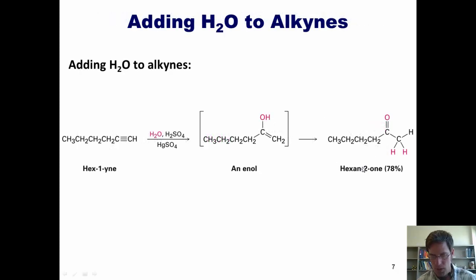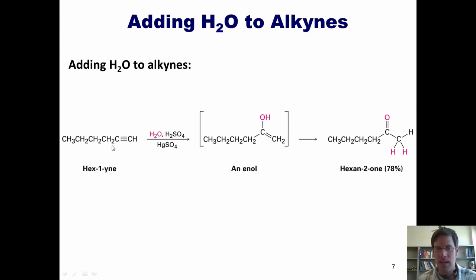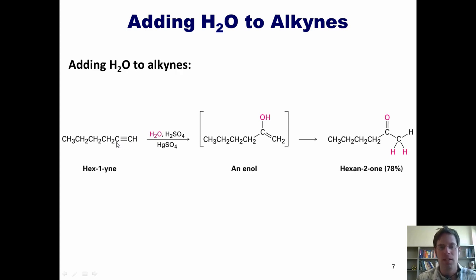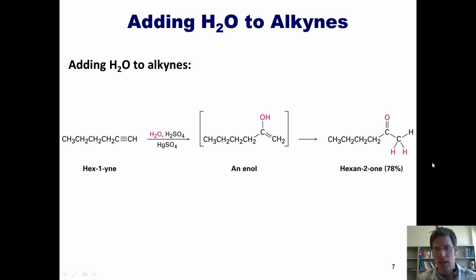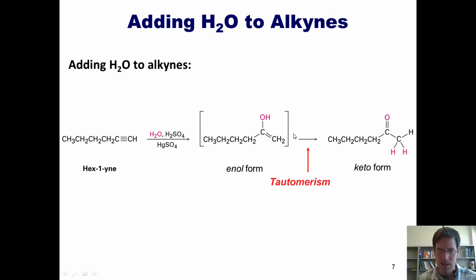We can also add water to alkynes, but it requires using a mercury sulfate catalyst to provide an extra kick. Electrons come out of the alkyne, grab a proton, and that proton gets placed on the less substituted carbon externally to give the more stable carbocation intermediate. Water then comes in to form a bond and gets deprotonated, resulting in an enol, which instantly rearranges to form a ketone. This interconversion between enol and keto forms is known as tautomerism.